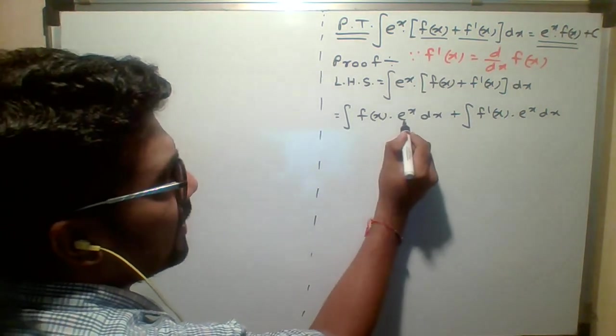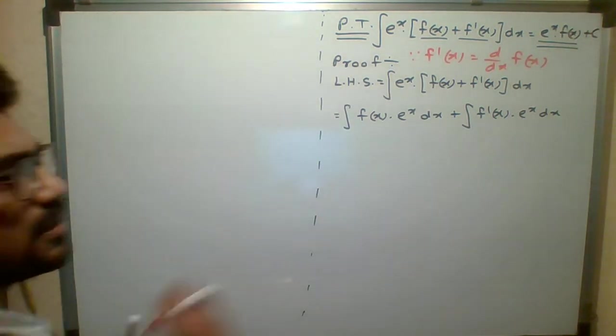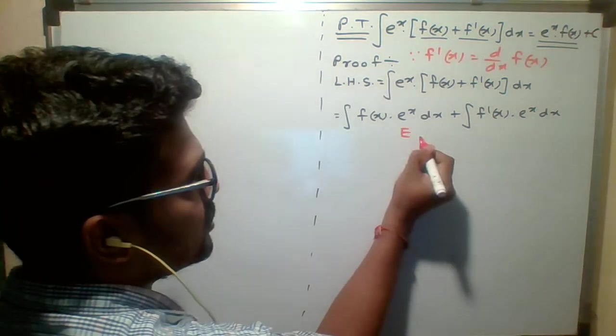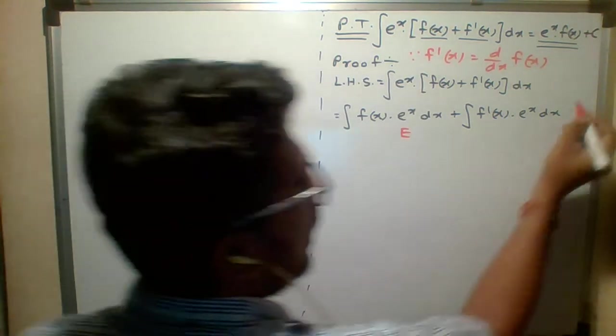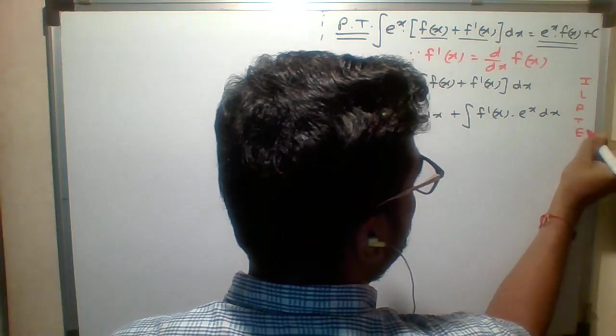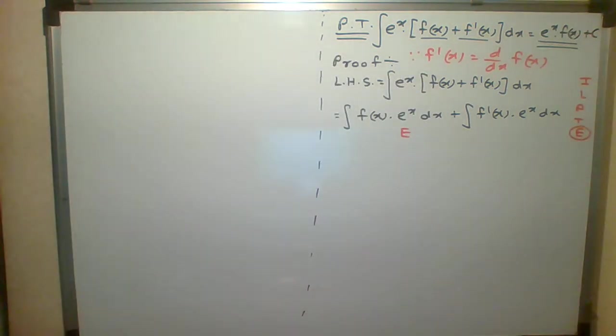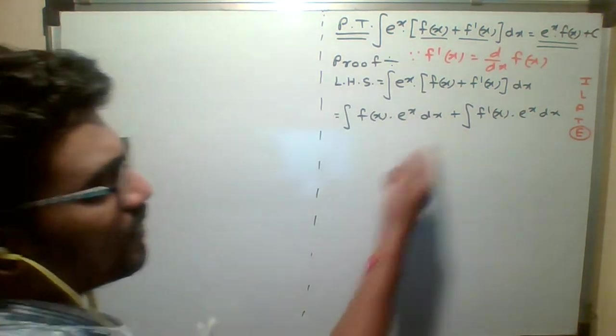And e comes under which functions? e raised to x comes under exponential. Exponential, f of x will be any function. So I, L, A, T, E. In ILATE, e always comes last. Exponential comes last. So exponential term is always second here.